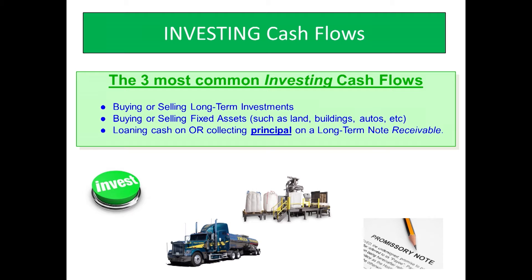Buying or selling fixed assets — such as land, buildings, automobiles, and equipment — is an investing cash flow. If I buy a piece of machinery, that's an investing cash flow. If I sell a piece of land, that's an investing cash flow. Also, loaning cash on or collecting principal on a long-term note receivable is an investing cash flow.